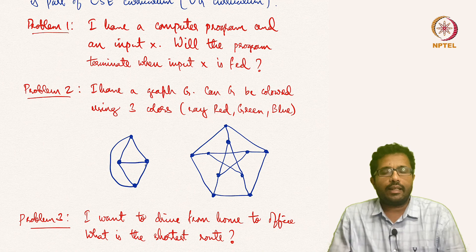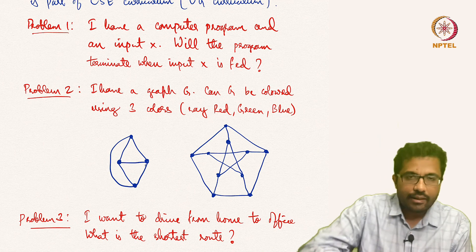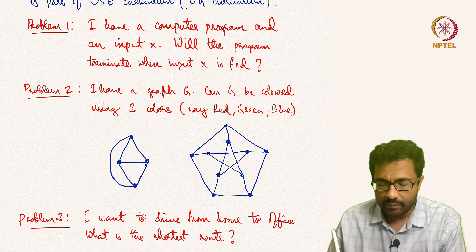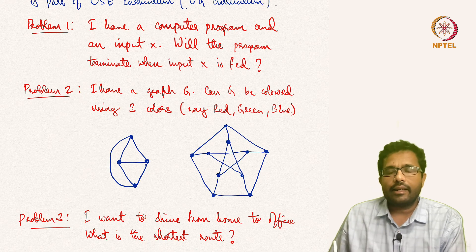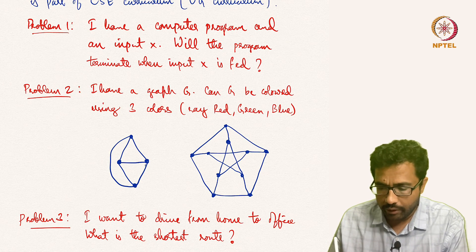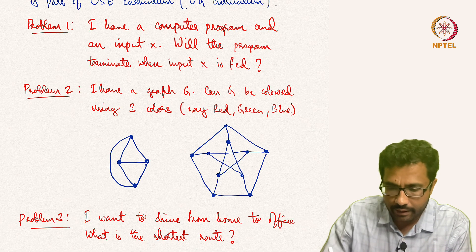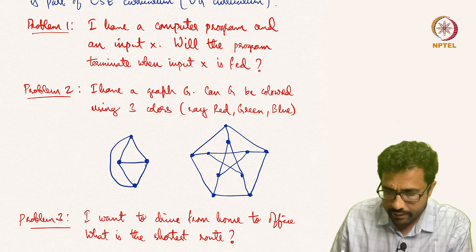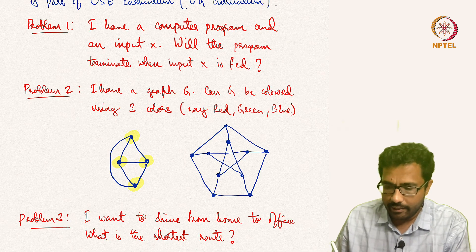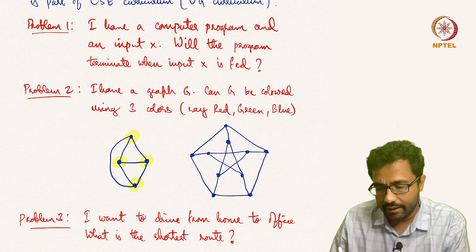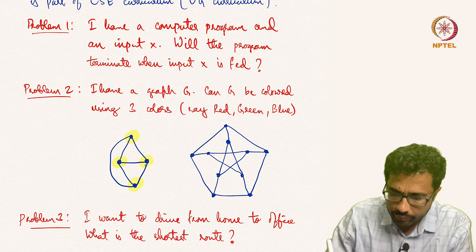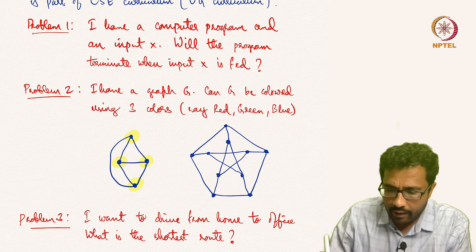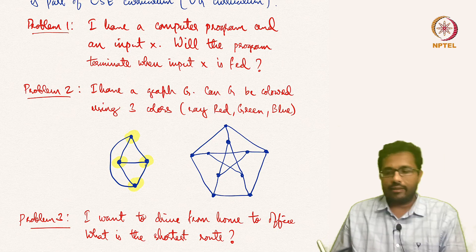The second computational question is: I have a graph G. Graphs are objects with two things — one is a vertex, these dots are vertices, and the lines or curved lines connecting the dots are what are called edges. The question is: can these graphs be colored using three colors?